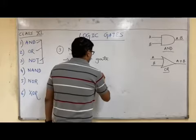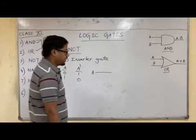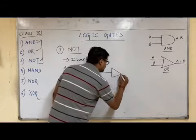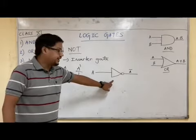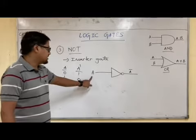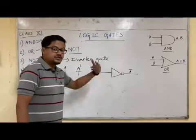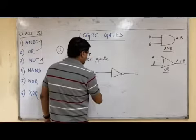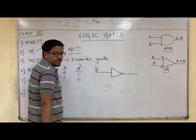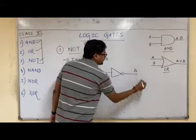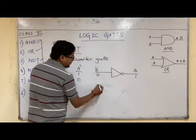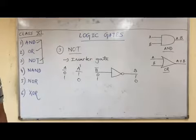The NOT gate is drawn as a triangle with a small circle at the output. We give input A, the NOT gate reverses it, and we get output A-bar (A complement). Conversely, if we give input B-bar, the output will be B. If input is 0, output is 1; if input is 1, output is 0. This is how the NOT gate works.